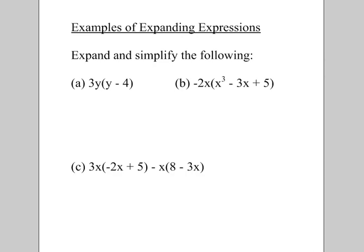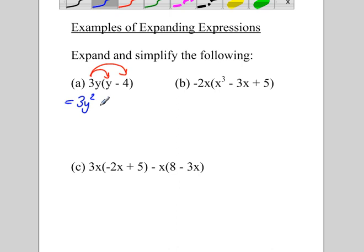So let's look at some examples. In this first example, we're going to distribute what's in front, which is the 3y, to what's inside the bracket. So 3y times y will become 3y squared. And that's where we're using our multiplication rule. y times y is y squared. And then 3y times negative 4 is going to be negative 12y. And that will be our final answer because those are not like terms.